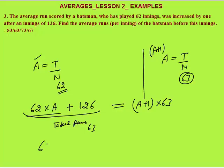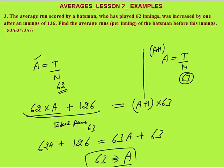Solving: 62a + 126 = 63a + 63. You get a = 126 − 63, so a = 63. It means his average runs in 62 innings were 63. That is the answer, option number 2.